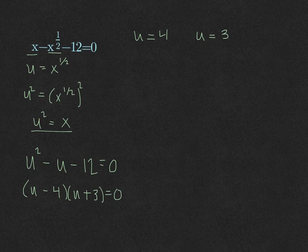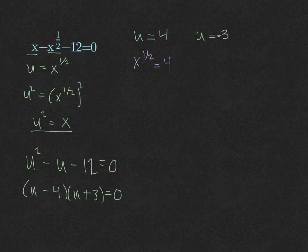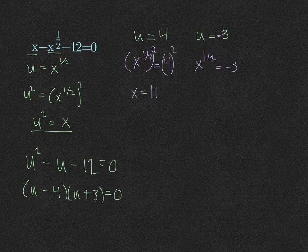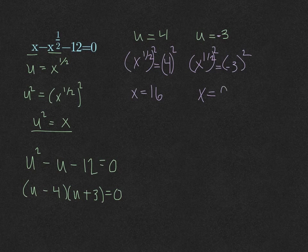We replace u with x to the one-half: x to the one-half equals 4, and x to the one-half equals negative 3. To solve, square both sides of each equation. From the first: x equals 16. From the second: x equals negative 3 squared, which is 9.